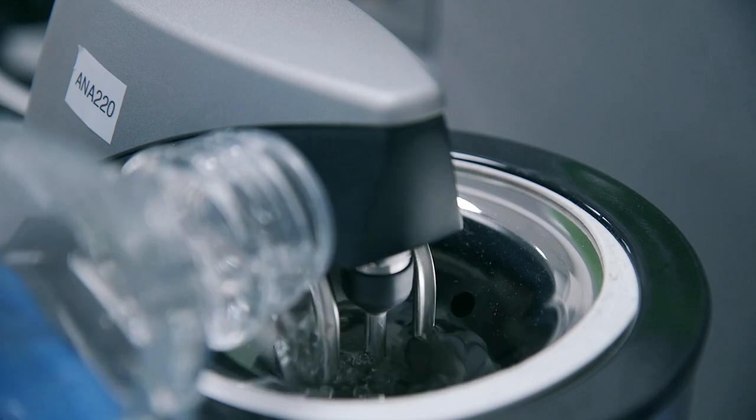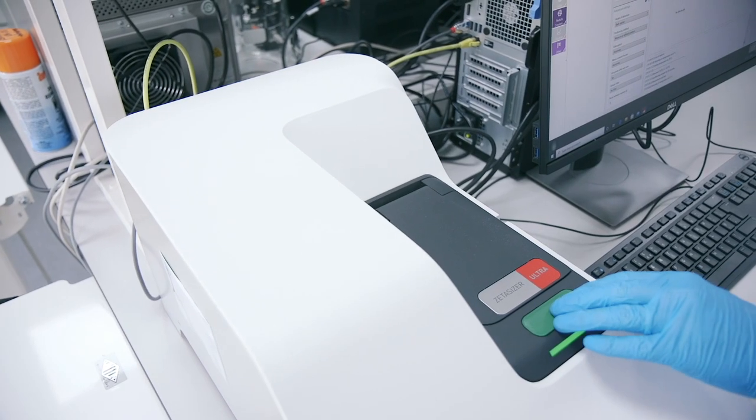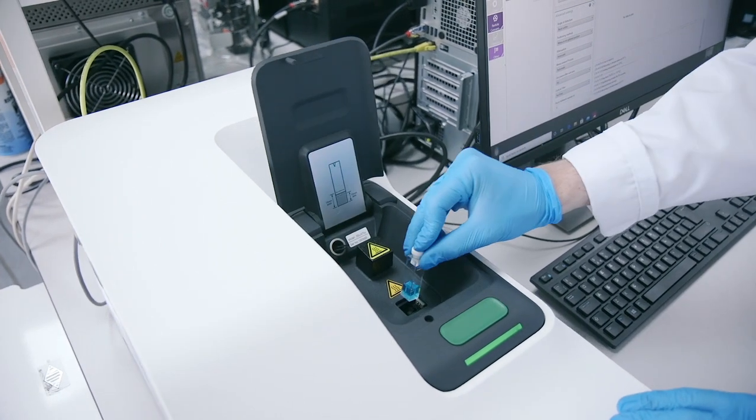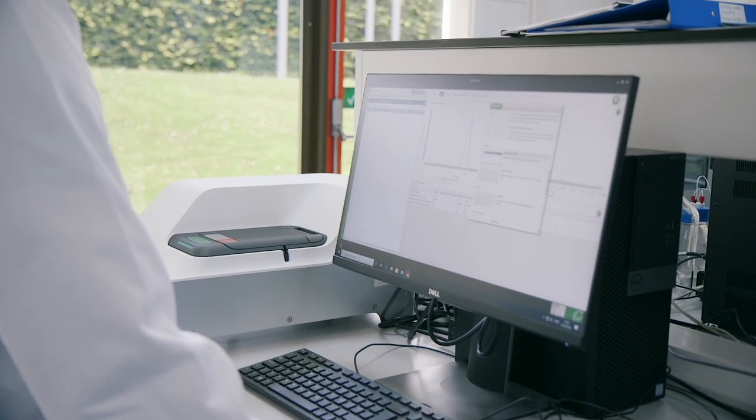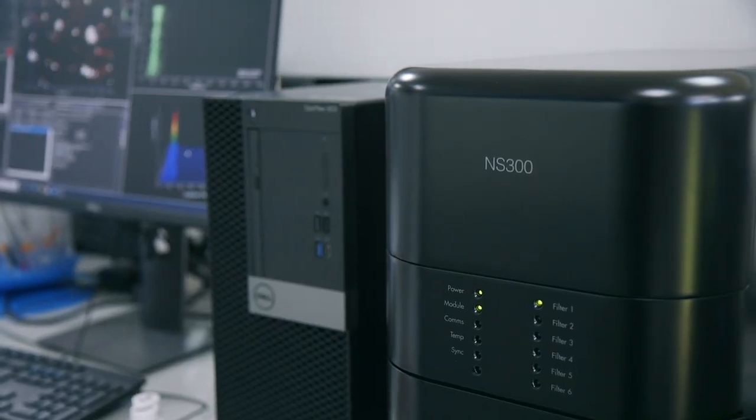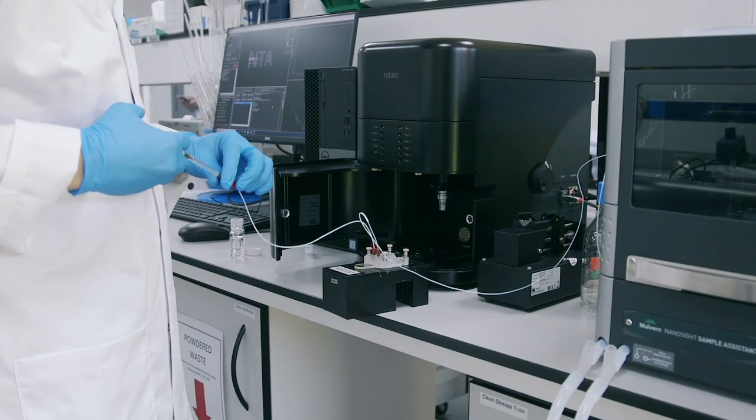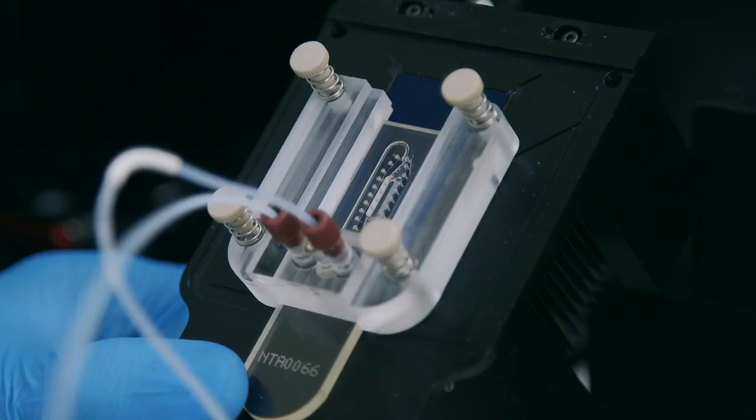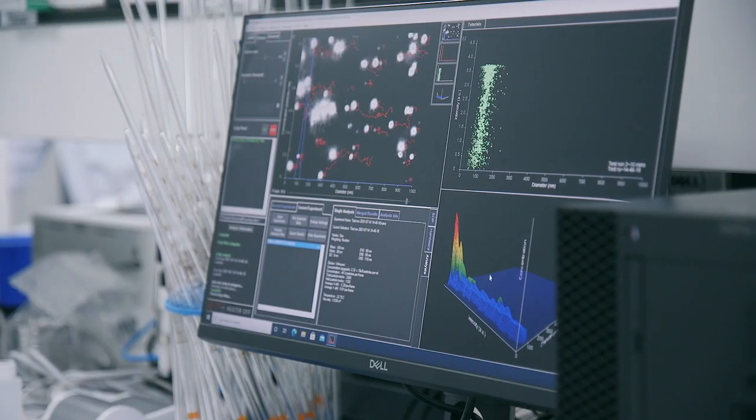This lab also hosts the Zetasizer Ultra light scattering system for particle size analysis at the nanoscale. The Zetasizer can also be used to measure particle concentration and zeta potential, which can impact a sample's stability and its propensity to aggregate. Complementary to the Zetasizer is the NanoSight NS300 with its Sample Assistant autosampler, which measures particle size and concentration via nanoparticle tracking analysis. This system can count and size over 1000 nanoscale particles in just 60 seconds.